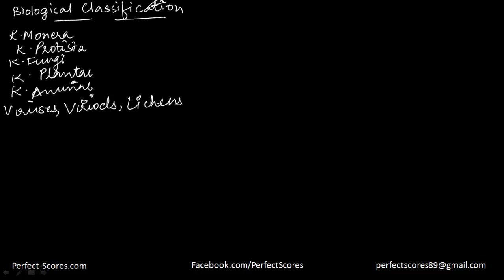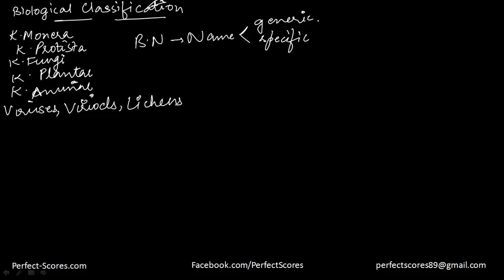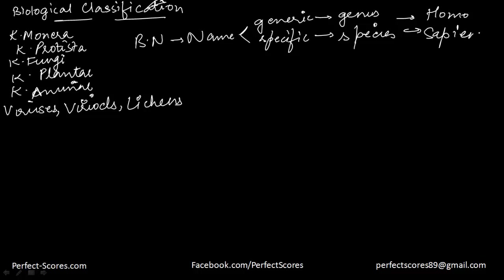Let's see if you remember who gave the binomial system of nomenclature. The binomial nomenclature means the name of a species will have two components: one is the generic name and one is the specific name. The generic name gives you the genus and the specific name gives you the species. For example, Homo is the genus and sapiens is the species. The person responsible for this was Carolus Linnaeus — he gave us the binomial system of nomenclature.